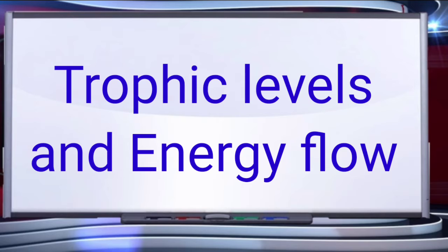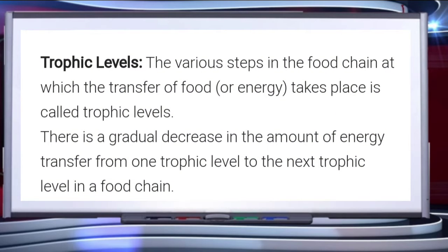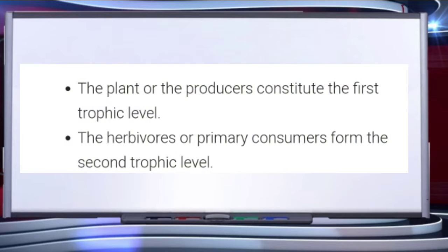Trophic levels are the various steps in the food chain at which the transfer of food or energy takes place. There is a gradual decrease in the amount of energy transfer from one trophic level to the next. In a food chain, plants or producers constitute the first trophic level, and herbivores or primary consumers form the second trophic level.